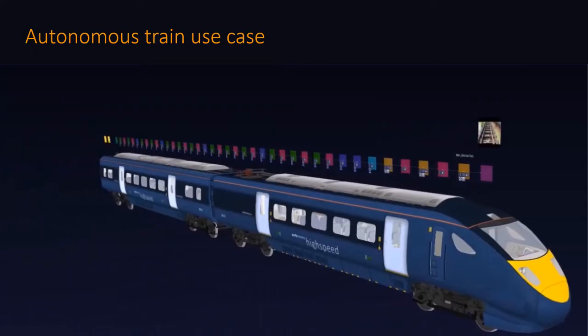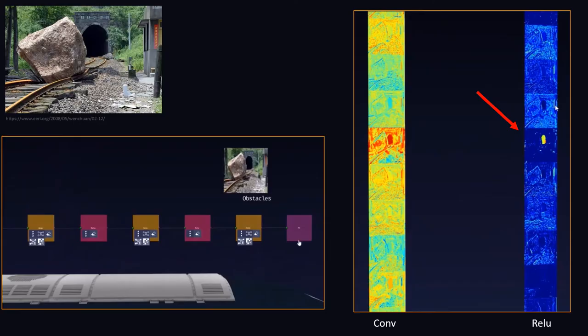Here is a use case of an autonomous train model we were asked to work on. The train needed to stop when there were obstacles on the track. When seeing a huge boulder on the tracks the model was detecting an obstacle and stopping — a good thing given the boulder's size. But by looking at a ReLU layer in the Zetane engine we saw that it was clearly detecting the tunnel, which told us we needed to add more images of tunnels labeled as non-obstacles.